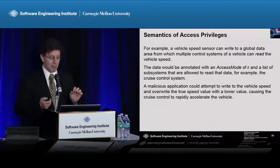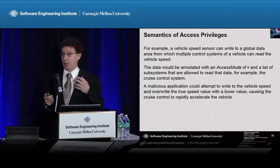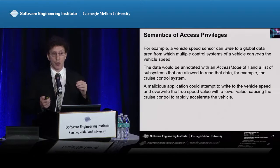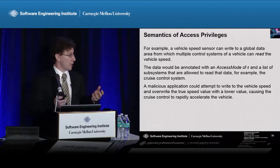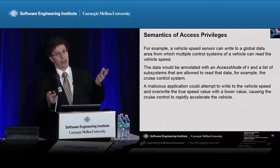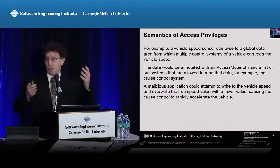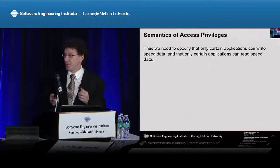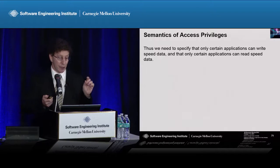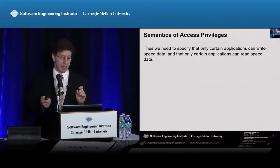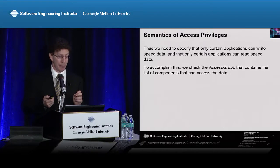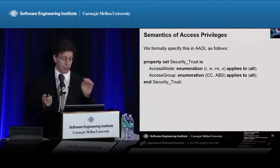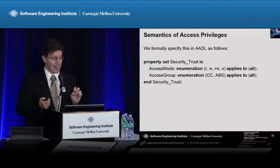This data would be annotated with an access mode of R and a list of subsystems allowed to read it, such as the cruise control. Now, if you had a malicious application, it might try to attack the car by writing a value to the vehicle speed, which would make the car think it was going slower than it actually was. The cruise control system would then try to increase the speed, and you'd end up with an uncontrolled acceleration. We need to specify that only certain applications can write or read speed data, so we check the access group and we check the writes.